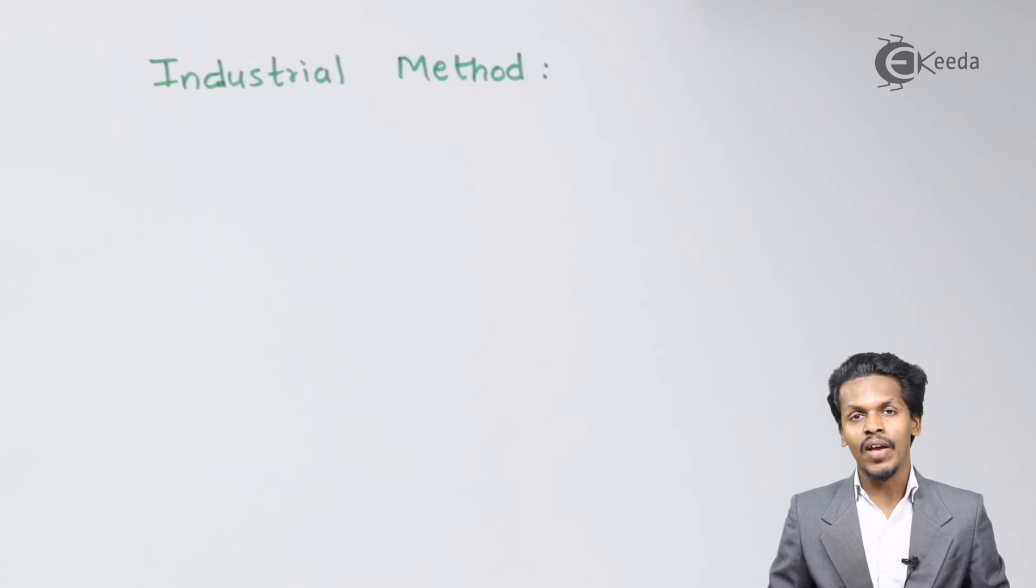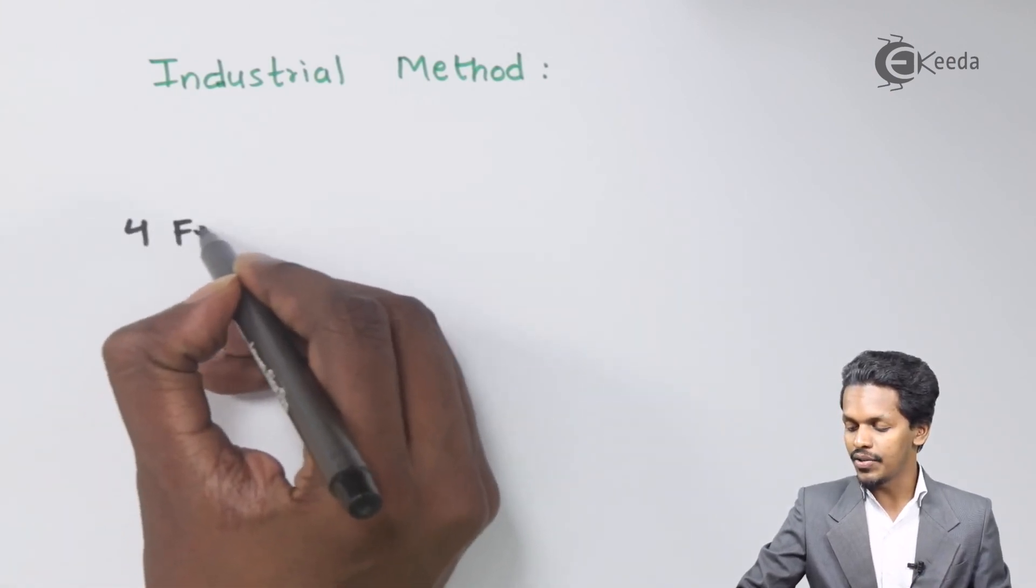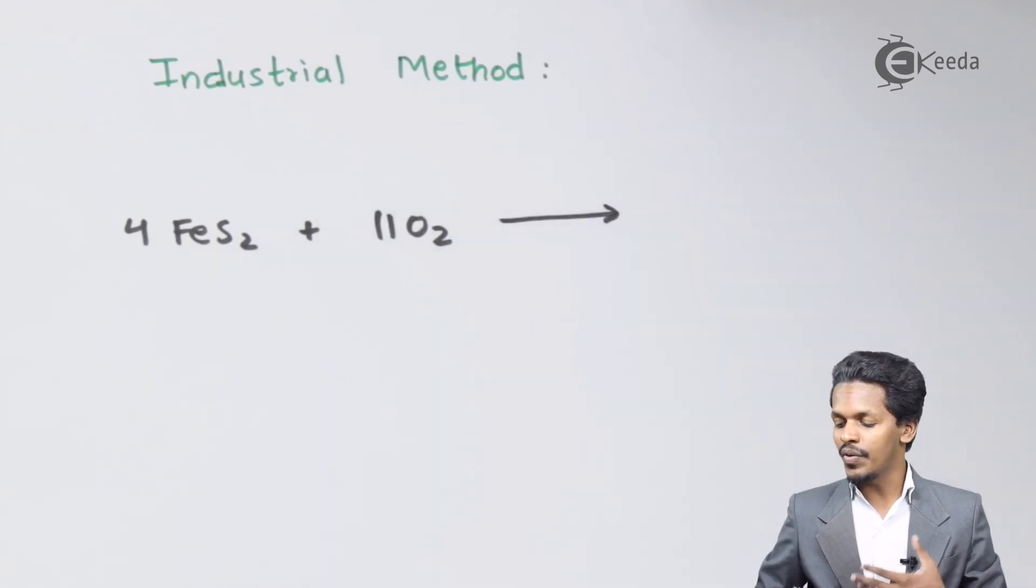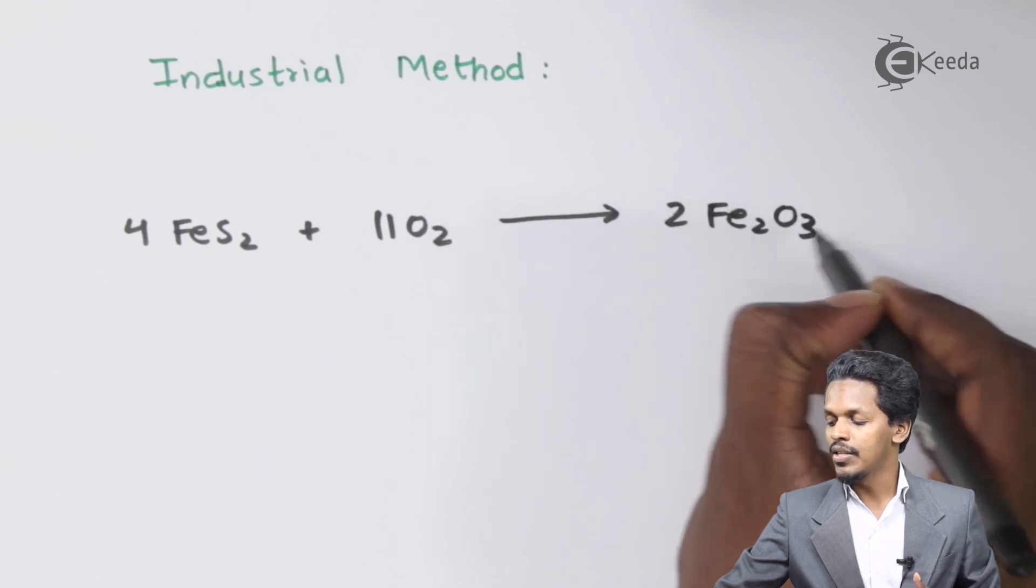We can obtain sulfur dioxide by industrial method using pyrites—iron pyrites, that is 4 moles of FeS₂. During combustion reaction, the product we get is 2 moles of Fe₂O₃.